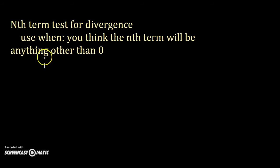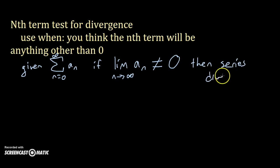Use the nth term test for divergence when you think the nth term of the series will be anything other than 0. If the limit is infinity or a number, then your series is divergent. If you perform the test and the limit is 0, you can't conclude anything and need to try another test.